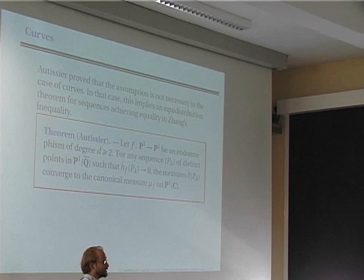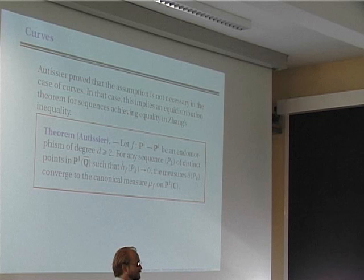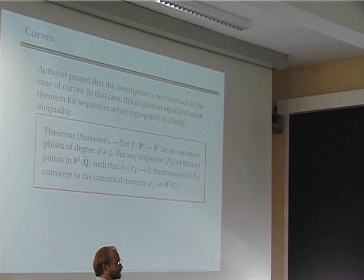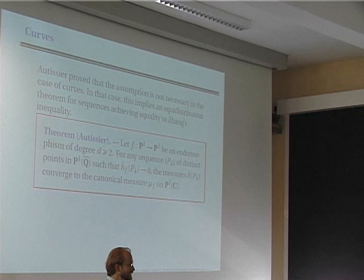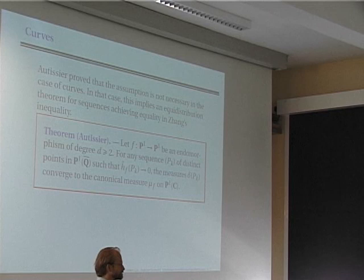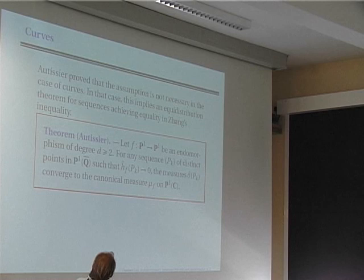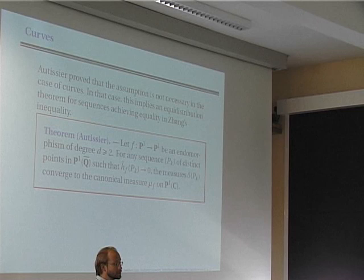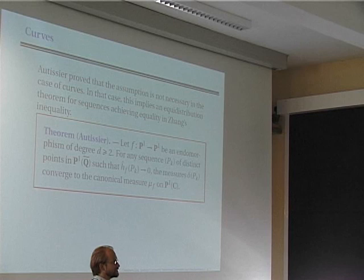For curves you have h⁰, h¹, and h²; the h² has a positive sign which doesn't matter, and the h¹ he could control. In that way he could achieve equality, and this implies that for a dynamical system on ℙ¹ you have equidistribution of points of small height towards the canonical measure μ_f.